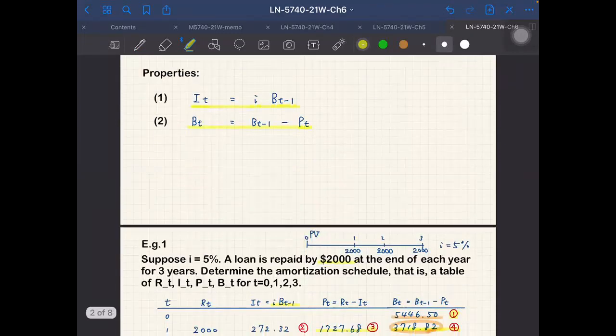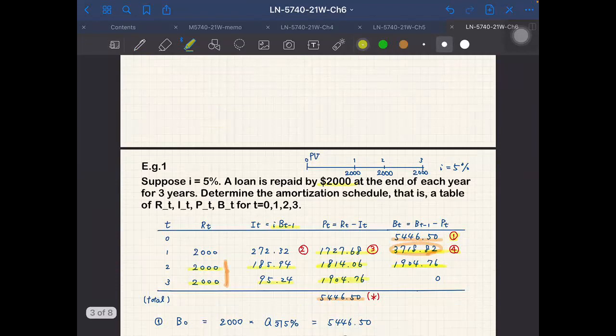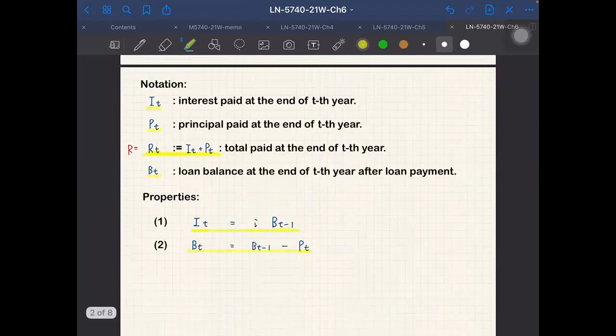We have two important things in this section. One is the relationship between these quantities, and the second is the table for constant repayment.